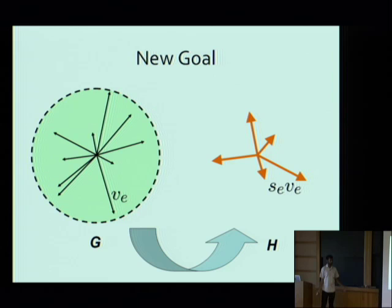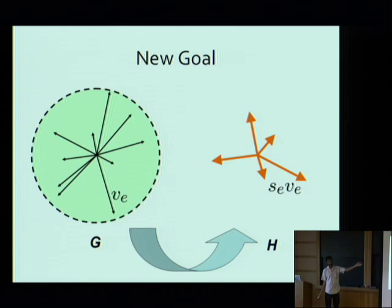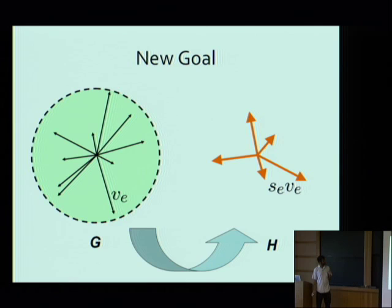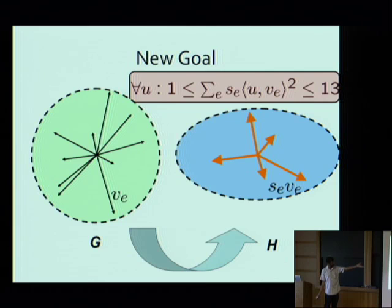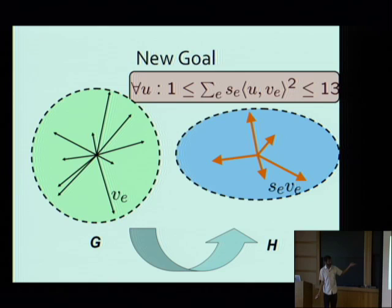So choosing a sparse subgraph of G corresponds to choosing a small subset of the vectors V_e and possibly stretching them by some scalars S_e. The problem reduces to this: you're given a decomposition of the identity and you want to select a small part which is well-conditioned. The n log n result came from the fact that if you randomly sample n log n vectors with probability proportional to their lengths, you get something close to the identity.